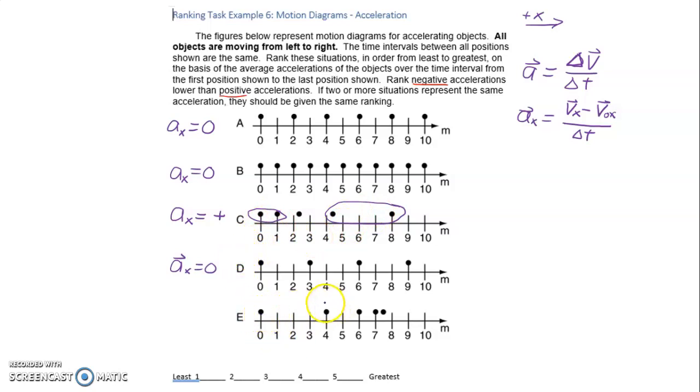In E we see that it starts off quickly. So our V_0x is going to be a large positive number and it ends going quite slowly. So our V_x is going to be a small positive number. So a small positive number minus a bigger positive number is going to end up with a negative number.